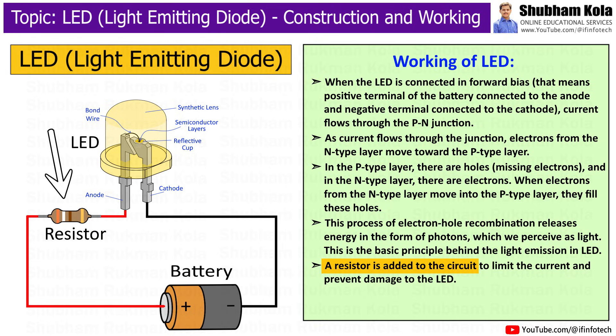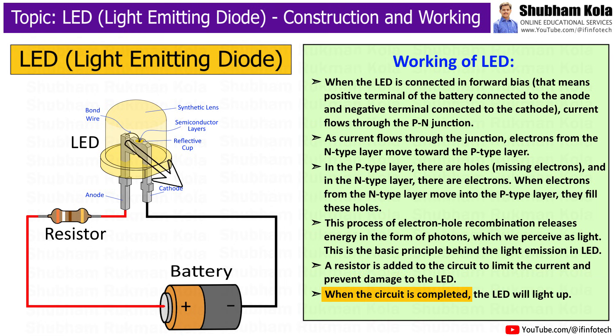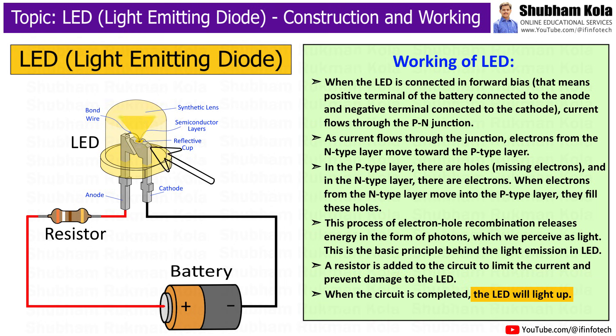A resistor is added to the circuit to limit the current and prevent damage to the LED. When the circuit is completed, the LED will light up.